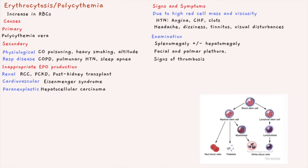On examination, the patient may have splenomegaly with or without hepatomegaly, as the spleen is the organ that stores blood and must accommodate the increased red cell mass. Patients may also have facial and palmar plethora due to increased red blood cells. There may also be signs of thrombosis, as the red blood cells, though more numerous, are of worse quality and more likely to cause endothelial injury or turbulent flow leading to clot formation.